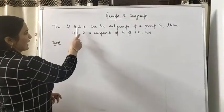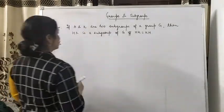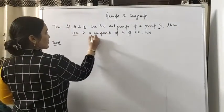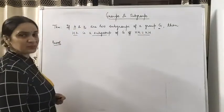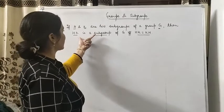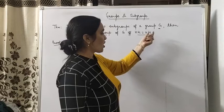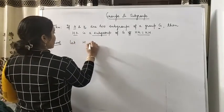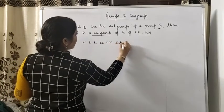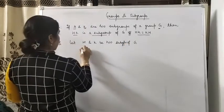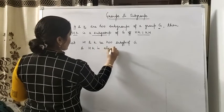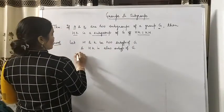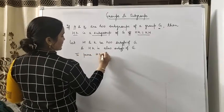Next theorem: if H and K are two subgroups of a group G, then HK is a subgroup if and only if HK = KH. आपको given क्या है? H, K कोई भी दो subgroups हैं group G के। Then HK is a subgroup if and only if HK = KH. So अब आपने क्या proof करना है? अगर HK subgroup है तो KH = HK होगा, और अगर HK = KH है तो HK subgroup होगा।